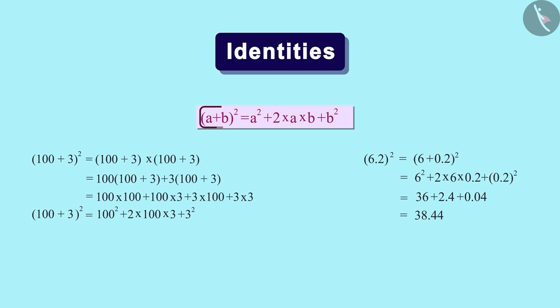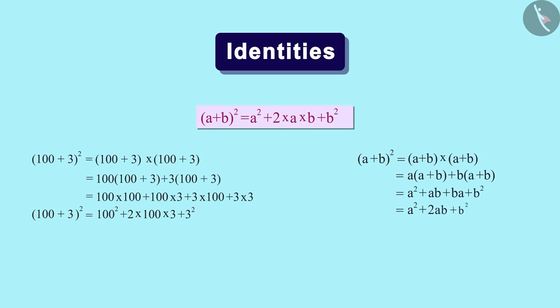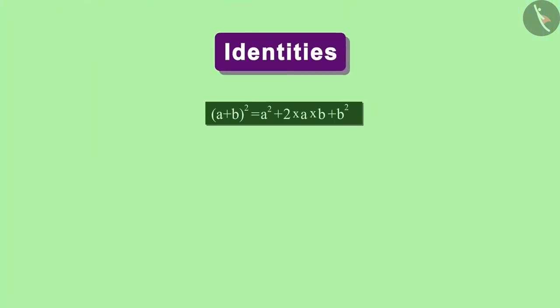This means that whenever we have two numbers A and B, then the square of their sum will be equal to the sum of A square, 2 times A times B, and B square. We will get the expression on the right side when we multiply A plus B by A plus B.